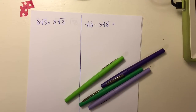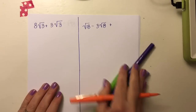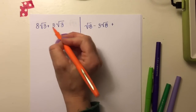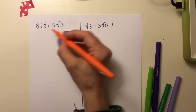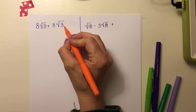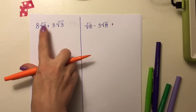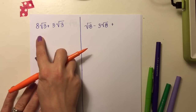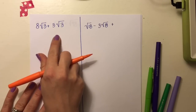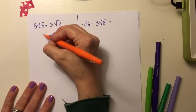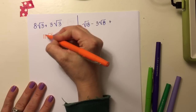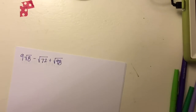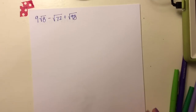Looking at the first example on the top left: when you're adding or subtracting radicals, they have to have the same radicand — that's what's underneath the radical symbol. We can add these together because they both have the square root of 3. You have 8 square roots of 3 plus 3 more square roots of 3, so altogether we have 11 square roots of 3.